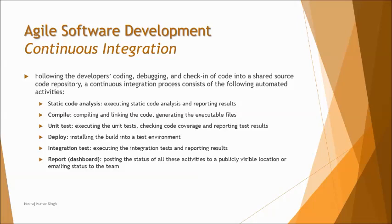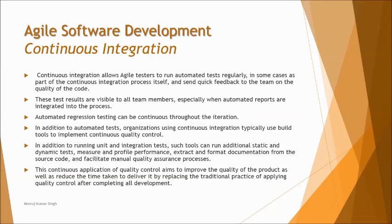Continuous integration allows the agile tester to run automated tests regularly, which saves a lot of time and helps identify defects at an early stage. The test results are visible to all team members, especially when automated reports are integrated into the process. Your tool must be capable of generating dashboard reports when automating — whatever executions you do are automatically generated, and the reports can be displayed as a dashboard to everyone, making it simple and easy to track the project's progress.